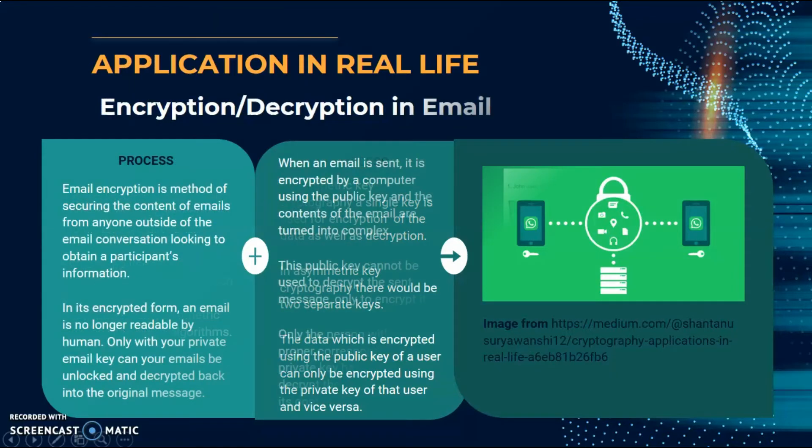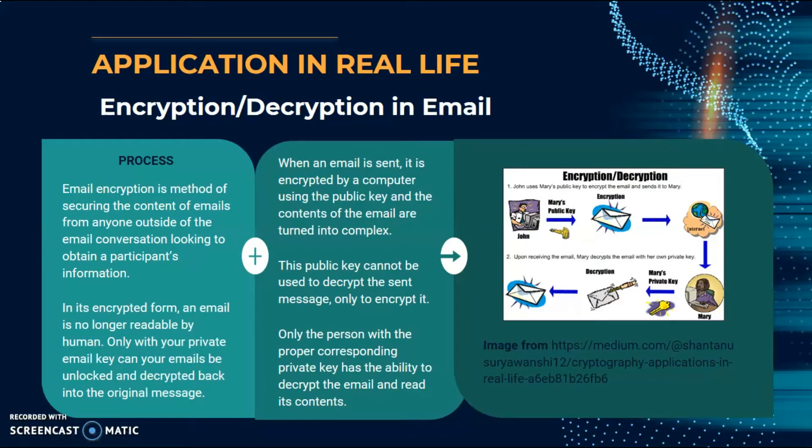The data which is encrypted using the public key of a user can only be decrypted using the private key of the user and vice versa. For the last application is encryption and decryption in email. Email encryption is a method of securing the content of email from anyone outside of the email conversation looking to obtain a participant's information. In encrypted form, an email is no longer readable by humans. Only with your private email key can your email be unlocked and decrypted back into the original message. When an email is sent, it is encrypted by a computer using a public key and the content of the email are turned into a complex form. The public key cannot be used to decrypt the sent message, only to encrypt it. Only the person with the proper corresponding private key has the ability to decrypt the email and read its contents.